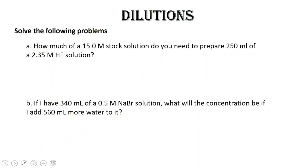Let's solve these problems. How much of a 15.0 molar stock solution do you need to prepare 250 milliliters of a 2.5 molar HF solution? Let's take a look at the numbers that we're given: 15.0 molar, 250 milliliters, and 2.35 molar. C1 is always going to be more concentrated than C2, so which of these values — 15.0 or 2.35 — is going to be C1? 15.0.